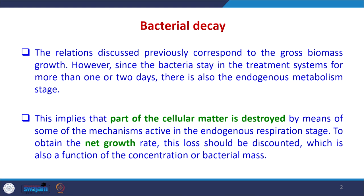When the substrate actually decreases, the bacteria in the system start using their own cellular materials for their own survival, and thus we reach the endogenous metabolism stage. This implies that part of the cellular matter itself is getting destroyed by mechanisms active in the endogenous respiration stage. By subtracting this endogenous decay or respiration stage, we can obtain the net growth rate.